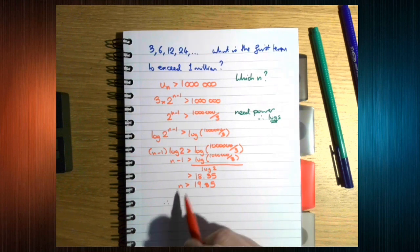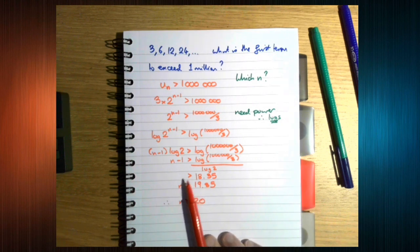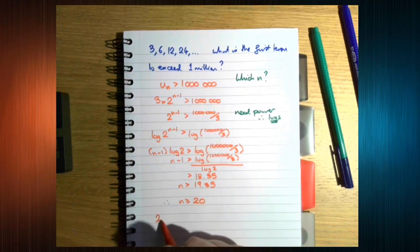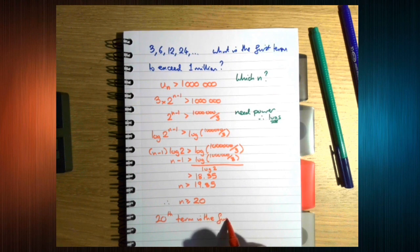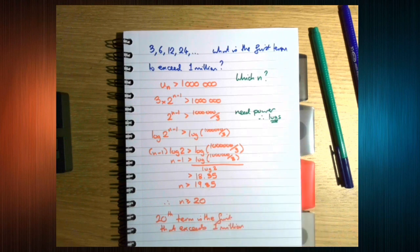We want the first number where this is true. So, n could be 400. With n as 400, this definitely exceeds a million. But we want the first term, which is going to be the 20th term. This is very typical with sequences and series for geometric, the idea of using logs.